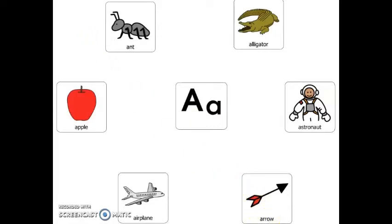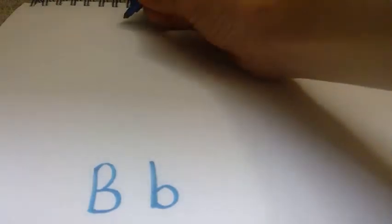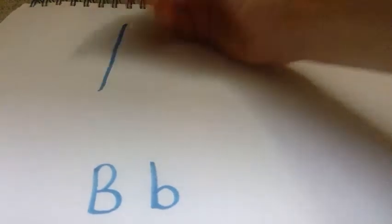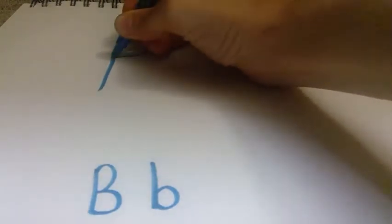Great job, friends! Next, we're going to draw the uppercase B and the lowercase B. This is the uppercase B and this is the lowercase B. Let's start with the uppercase B. We always start at the top of our paper and we're going to draw a long line down. Then we're going to go back to the top of our line and draw one curve to the middle and another curve to the bottom and you made your uppercase letter B.